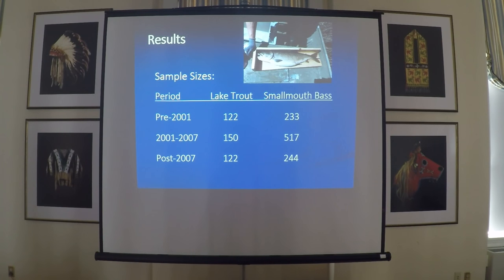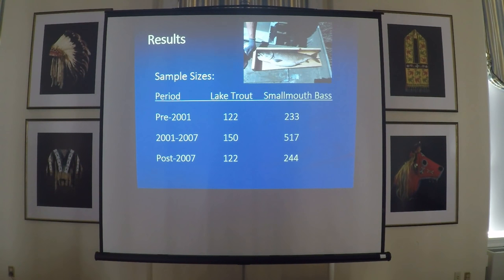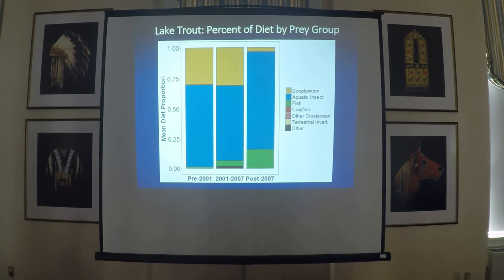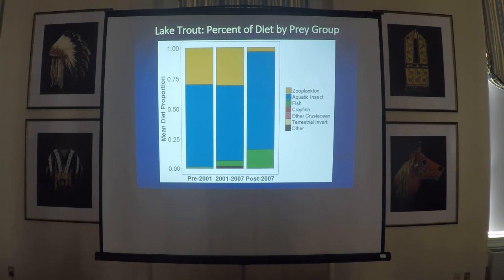Moving on to the results, we have quite a few samples for both species in all three time periods, with a minimum of 122 samples per period for the lake trout and 233 for the smallmouth bass.